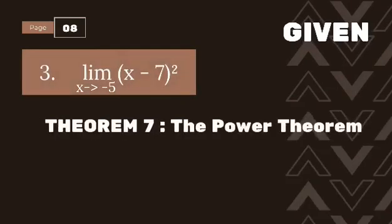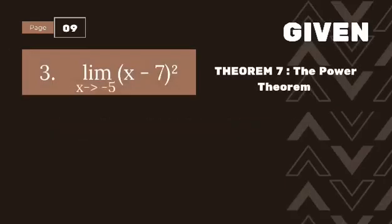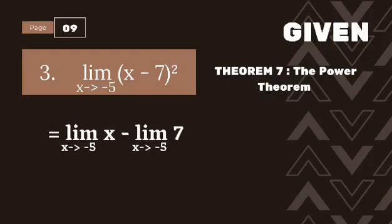The theorem used in number three is Theorem 7, the Power Theorem. The limit of (x minus 7) squared as x approaches negative 5. First, we separate (x minus 7) squared: we have the limit of x as x approaches negative 5, minus the limit of 7 as x approaches negative 5. Then we substitute the value x equals negative 5, giving us negative 5 minus 7.